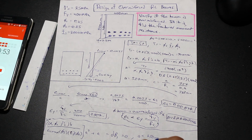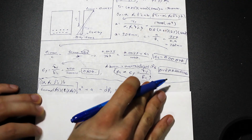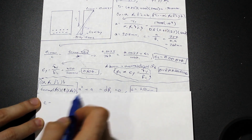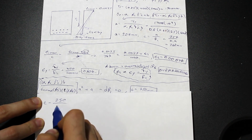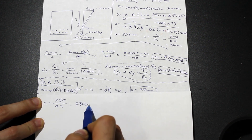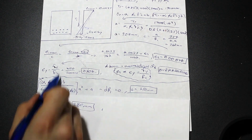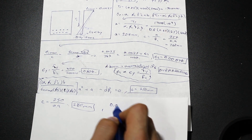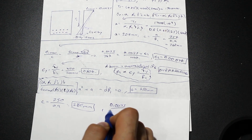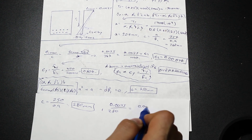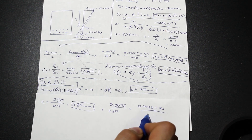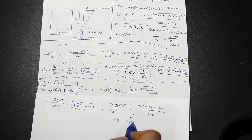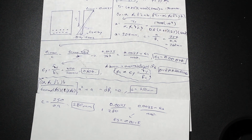From the quadratic, the root we want gives a = 250 mm. Then c = a / β₁ = 250 / 0.9 ≈ 280 mm. We apply the similar-triangles strain formula again: ε_c max / c = (ε_c max + ε_s) / d, with c = 280 mm and d = 400 mm. Solving gives ε_s = 0.0015.